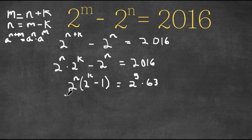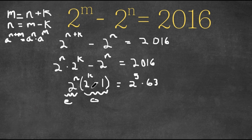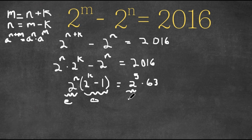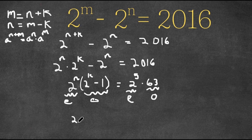Now as you can see, 2 to the power of n is even, and 2 to the power of k minus 1 is odd — because 2 to the power of k is even and subtracting 1 makes it odd. On the right side, 2 to the power of 5 is even and 63 is odd. So I'm going to set the evens equal to each other: 2 to the power of n equals 2 to the power of 5. Because these two have the same base, we know the exponents are equal, meaning n is equal to 5.